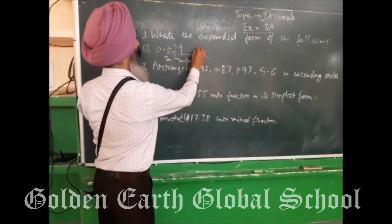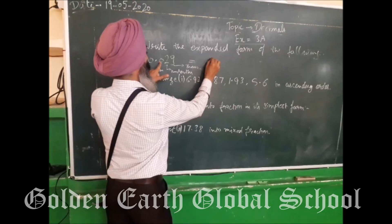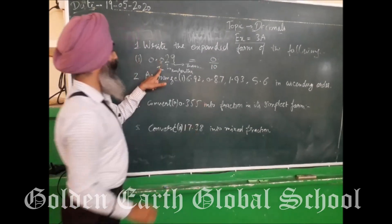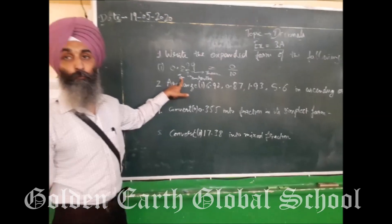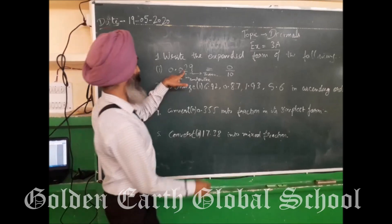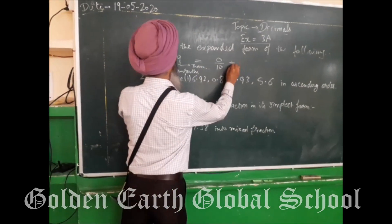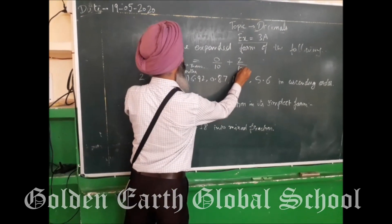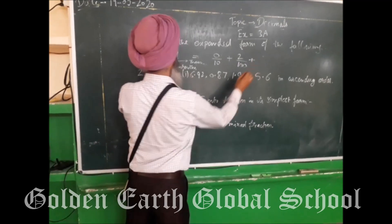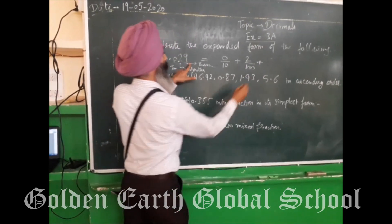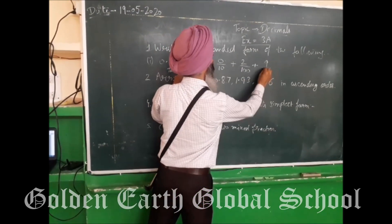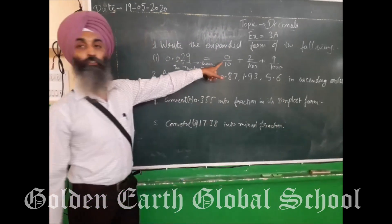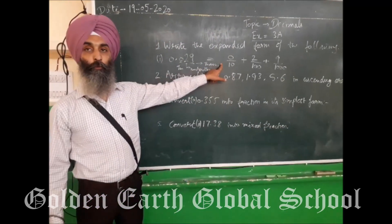So how will you write it? After decimal, it is 0 upon 10 because it is the tenths place. And this is the hundredths place, so you will write 2 upon 100. And 9 is in the thousandths place, so you will divide it by 1000. So this is your expanded form.